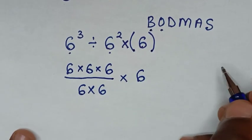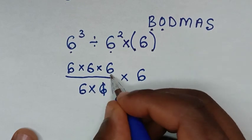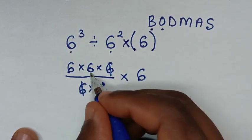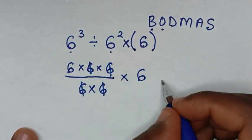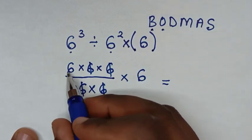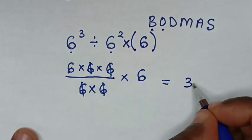From here, to simplify, this 6 will cancel this 6, and 6 will cancel this 6. So it will be equal to 6 times 6, which is 36.